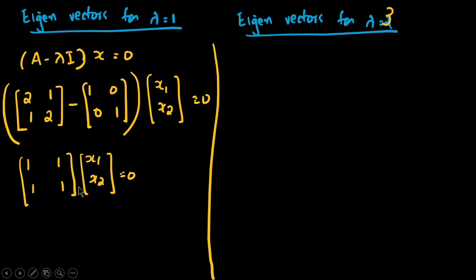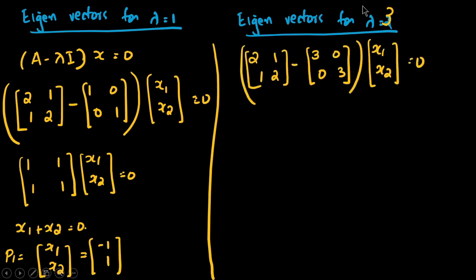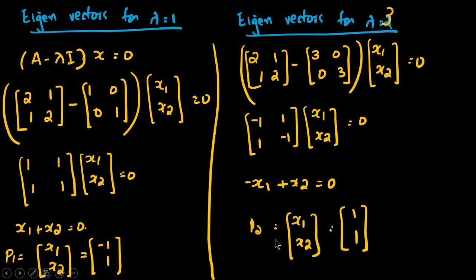After performing the subtraction for lambda equals 1, we get x1 plus x2 equals 0. So the first eigenvector P1 is taken as [−1, 1]. For lambda equals 3, substituting 3 for lambda gives −x1 plus x2 equals 0, meaning x1 equals x2. So the second eigenvector P2 is written as [1, 1].